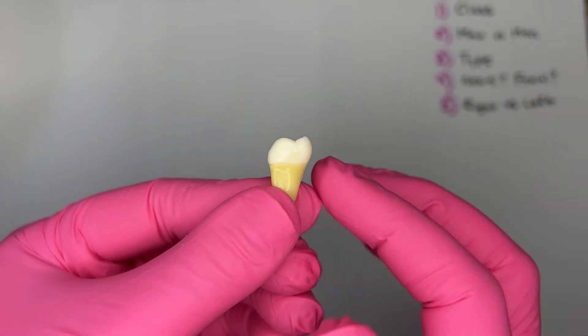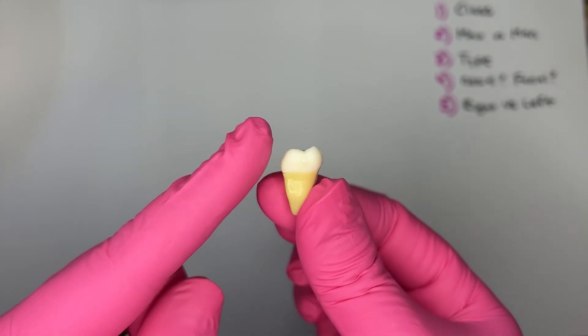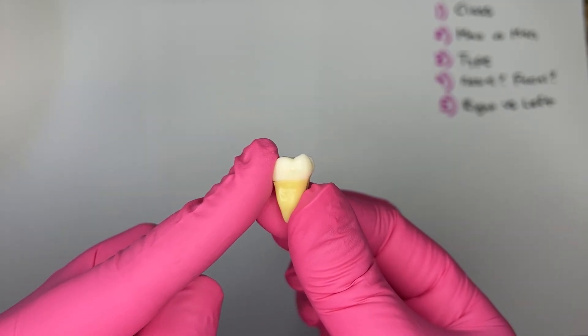And the lingual cusps are sharper, so I know that this side that's tilting away from the less sharp cusps is the facial.